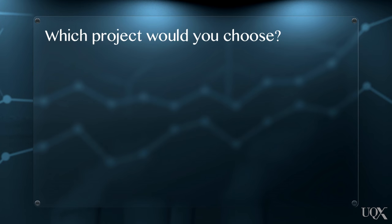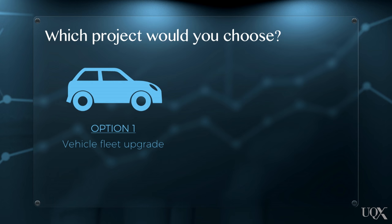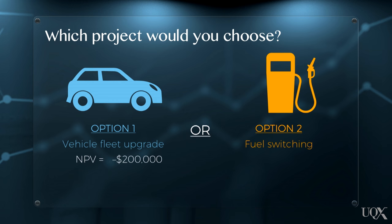Consider this scenario. Your company wants to reduce its carbon footprint, and it has two low emissions technologies to choose from. The first is a vehicle fleet upgrade, with a net present value, or NPV, of negative $200,000. The second is a fuel switching project, with a net present value of negative $100,000. Assuming you have capital constraints and can only implement one of these projects, which abatement option would you choose?